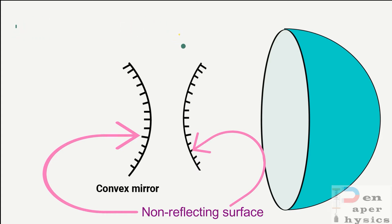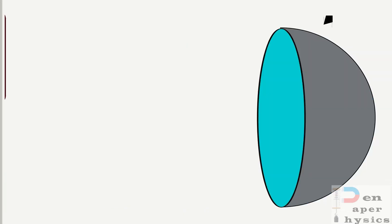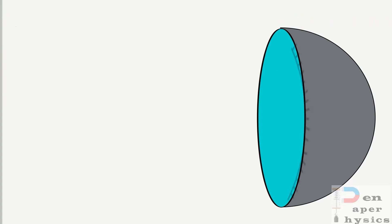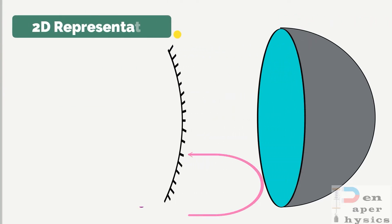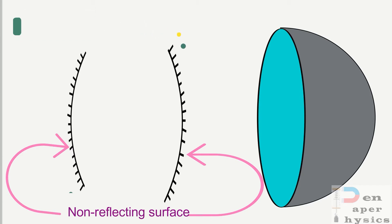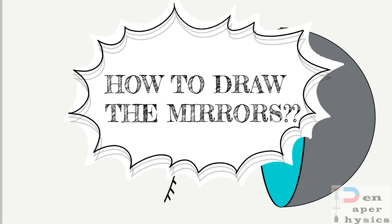Don't forget to mark the non-reflecting surface. Now we will consider another case where the inner surface of the hollow glass sphere is silvered — that means the reflecting surface is bulged inwards. This kind of mirror is called a concave mirror. Here is the 2D representation of the concave mirror. You can draw it in the opposite way also, but don't forget to mark the non-reflecting surface.